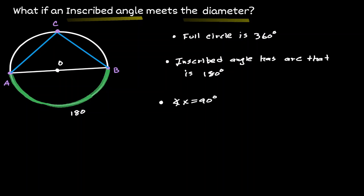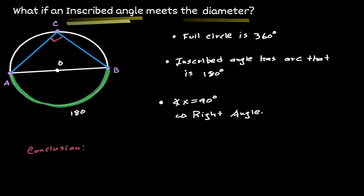So we have a right angle here. In conclusion, when an inscribed angle meets the diameter of the circle, the inscribed angle will be a right angle.